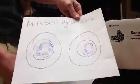Then cytokinesis happens. The cytoplasm pinches in half, which means that there are two daughter cells.